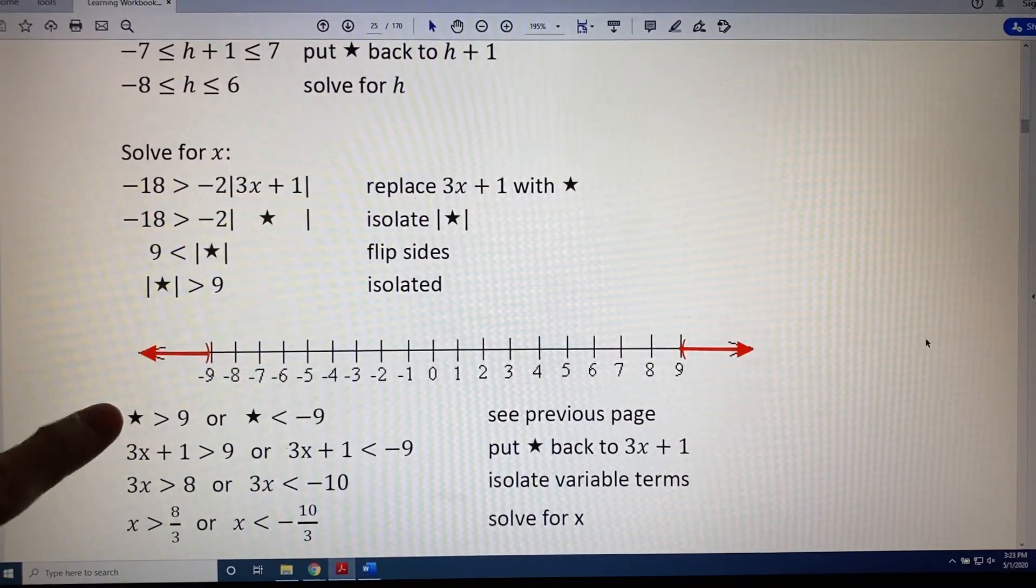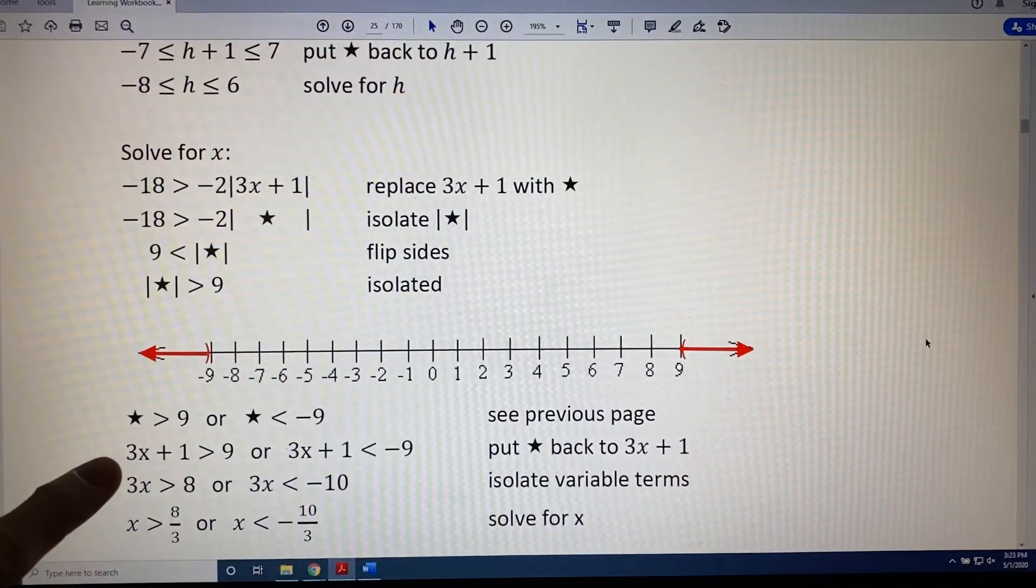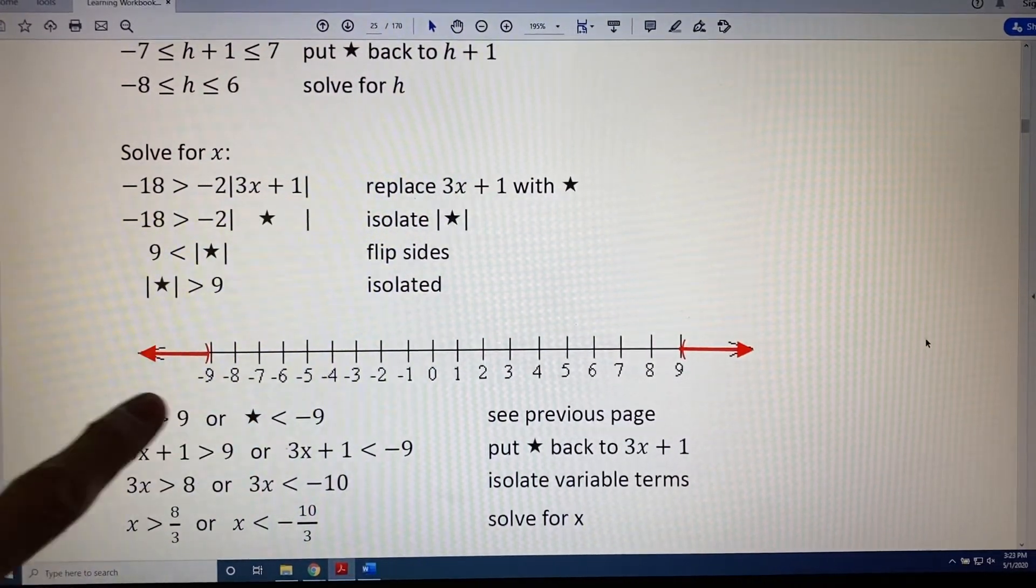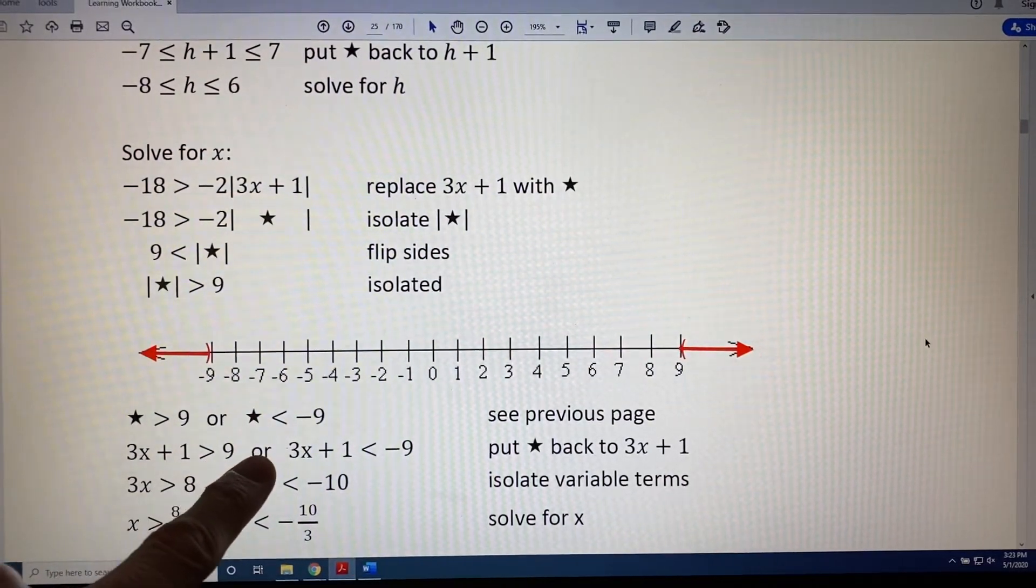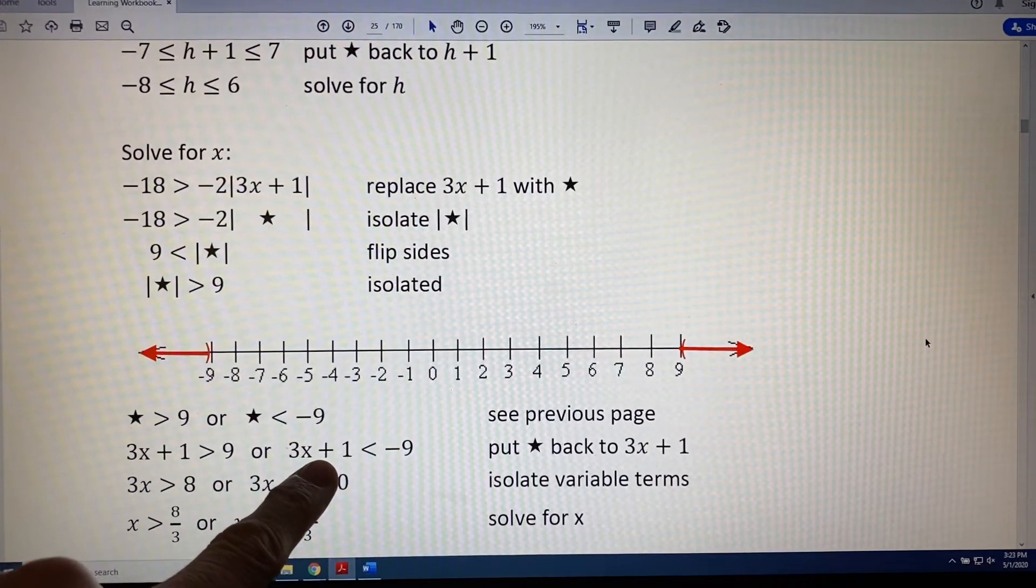Now, put star back the way it was. Star used to be 3x plus 1. So, in each place of each of these stars, write 3x plus 1. So, we get 3x plus 1 is greater than 9 or 3x plus 1 is less than negative 9.